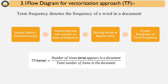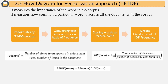Term frequency means the number of times a word appears in the document divided by the total number of terms in that document. In this process, we imported sklearn's feature extraction text module and the CountVectorizer library. Using fit_transform, we converted all the words into numbers and created a data frame which we used as input to the model.